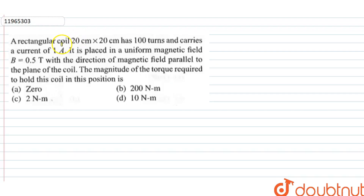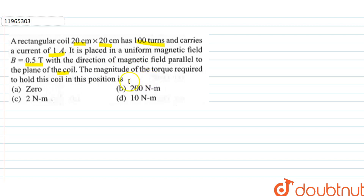In this question, we have given a rectangular coil 20×20 cm, and it has about 100 turns, and it carries a current of 1 ampere. This is placed in a uniform magnetic field of 0.5 tesla, with the direction of the magnetic field parallel to the plane of the coil. The magnitude of the torque required to hold this coil in this position is what?